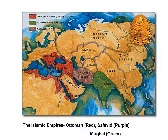These three empires — the longest lasting, shown in red, is the Ottoman Empire, which only collapsed officially at the end of World War I, though the shaded area in red represents the height of the empire. The Safavid Empire was centered largely in modern-day Iran, and the Mughal Empire was centered in modern-day India, Pakistan, and parts of Afghanistan.